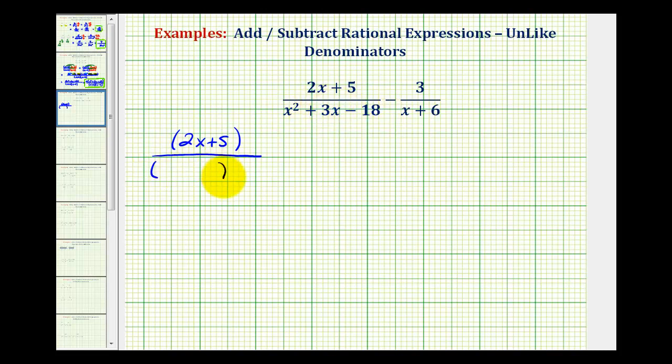We're going to have two binomial factors. The first terms will be x and x, and then we want the factors of negative 18 that add to positive 3. That's going to be positive 6 and negative 3, so one factor is x plus 6 and one factor is x minus 3.